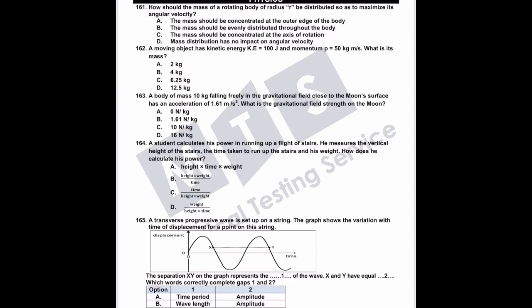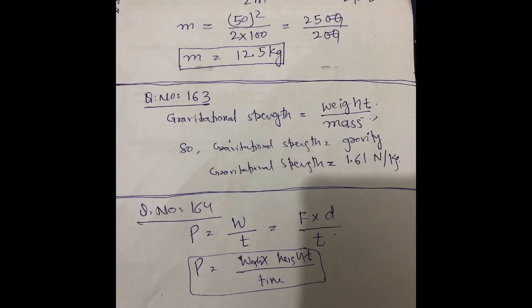Question 164: a student calculates his power in running up a flight of stairs. He measures the vertical height of stairs, the time taken to run up, and his weight. Power = work / time. Work = force × displacement. Here force is weight and displacement is height. So power = weight × height / time.